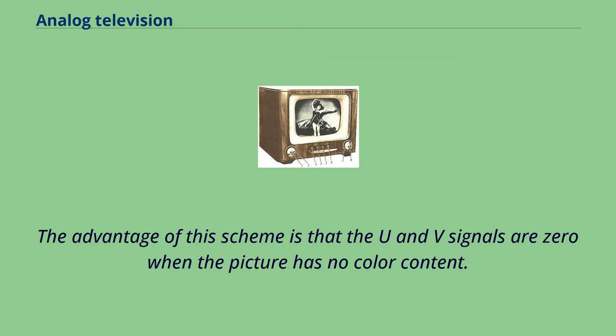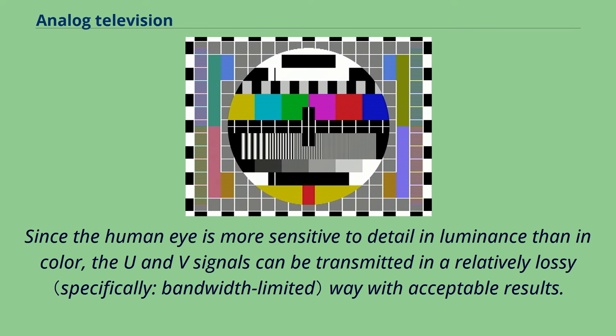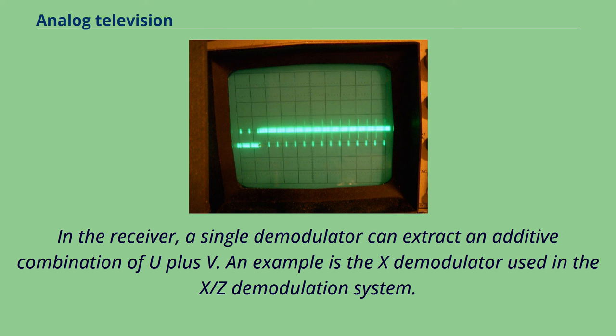In the receiver, a single demodulator can extract an additive combination of U plus V. An example is the X demodulator used in the X-Z demodulation system. In that same system, a second demodulator, the Z demodulator, also extracts an additive combination of U plus V, but in a different ratio.